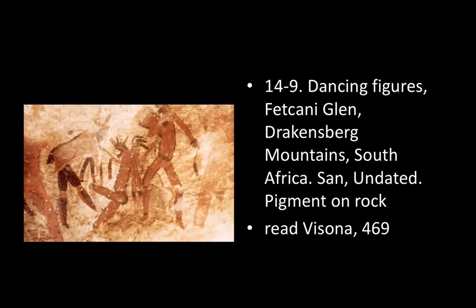During these dances, spiritually gifted !Kung feel a supernatural power called n/um boiling up within them. They may tremble, sweat, salivate, and collapse, and they need to be supported by the other dancers. In other San groups, the same type of altered state would trigger nosebleeds. N/um is in the sweat of the affected !Kung and can anoint a sick patient or the families who have gathered for the dance.